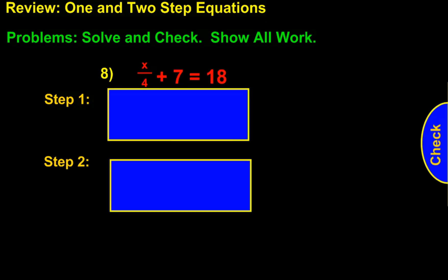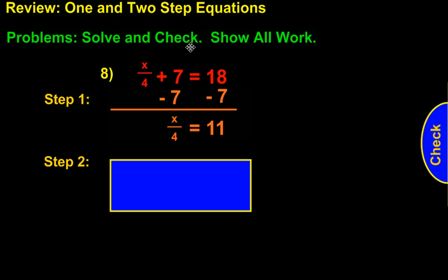Next, we'll take a look at question number 8. We have x over 4 plus 7 equals 18. Once again, we want to get x by itself. The first step is to subtract 7 from both sides, which eliminates the plus 7. The x/4 will come down, and if we subtract 7 from 18, we get 11.